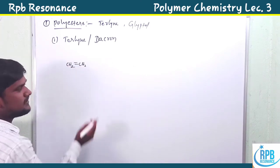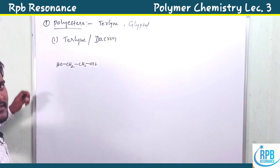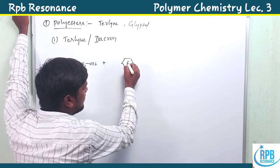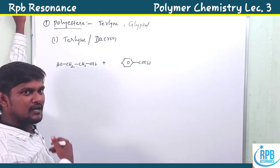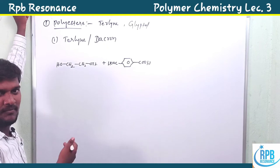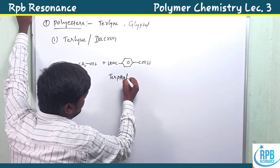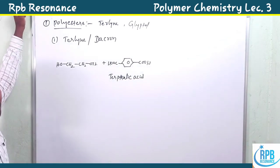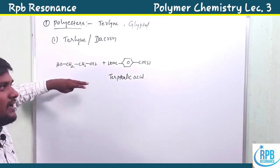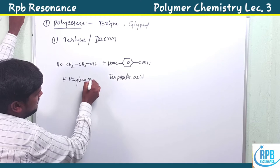The starting materials are: first, ethylene with two –OH functionalities at adjacent positions, simply called ethylene glycol. When ethylene glycol is treated with a dicarboxylic acid — benzene having a carboxylic acid at the para position is called terephthalic acid. So the combination of two different monomeric units — ethylene glycol and terephthalic acid — is used.